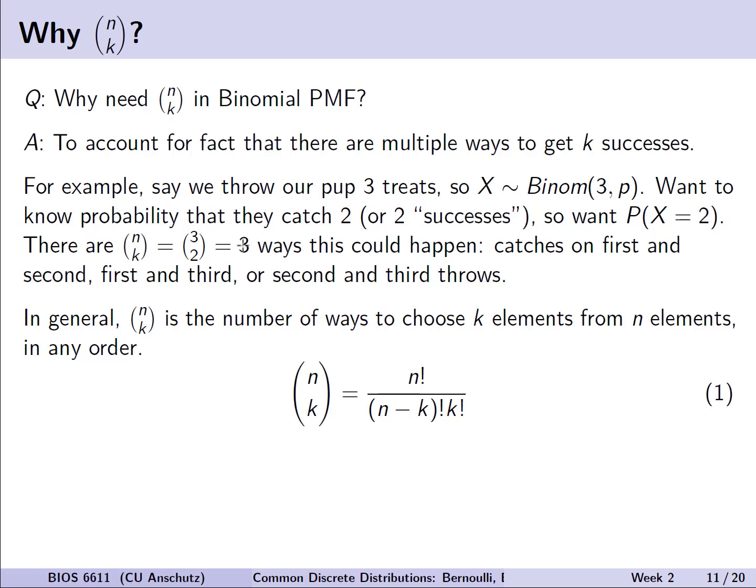In general, n choose k, or that binomial coefficient, is the number of ways to choose k elements from n possible elements in any possible order. Order does not matter. Mathematically, we can represent it as n choose k is equal to n factorial divided by n minus k factorial times k factorial.